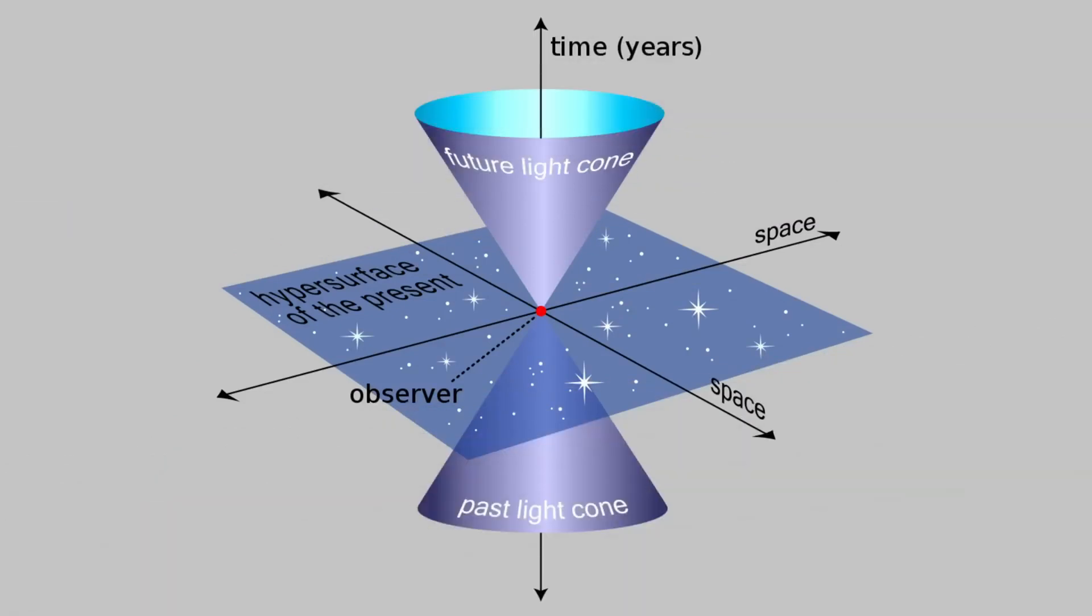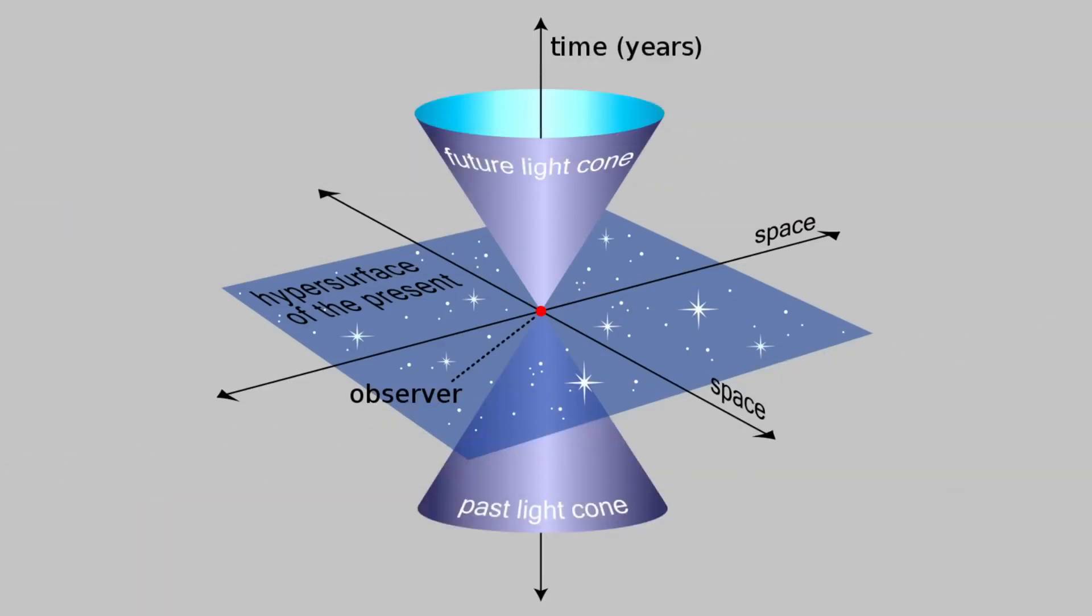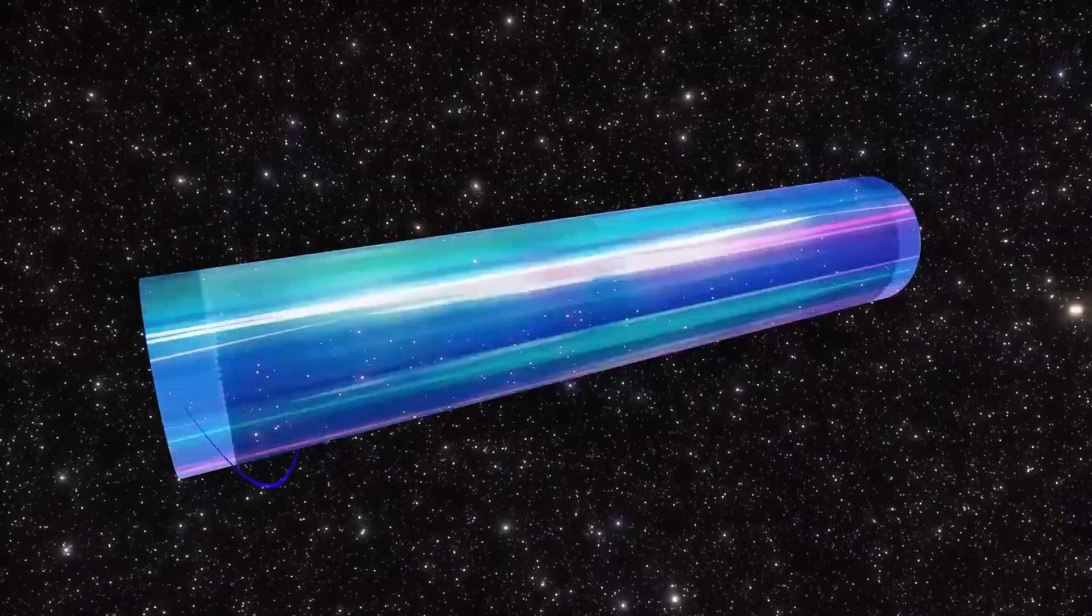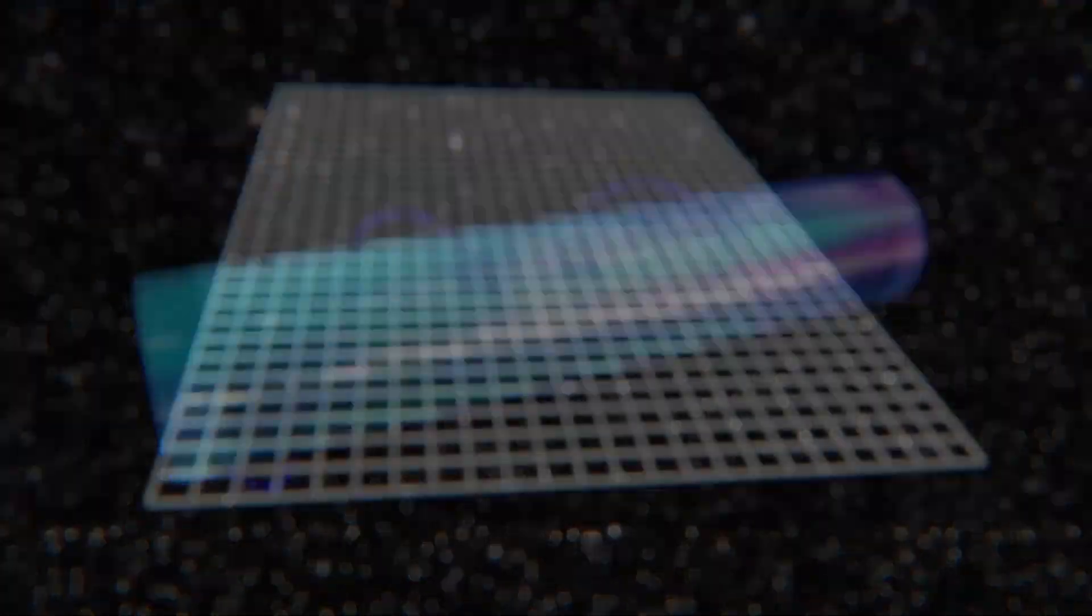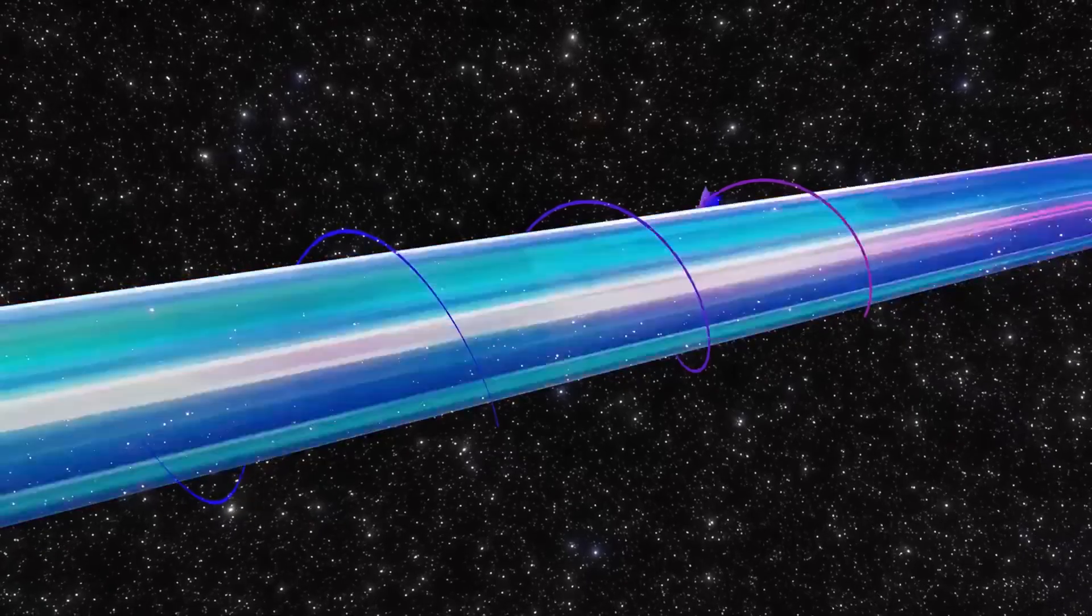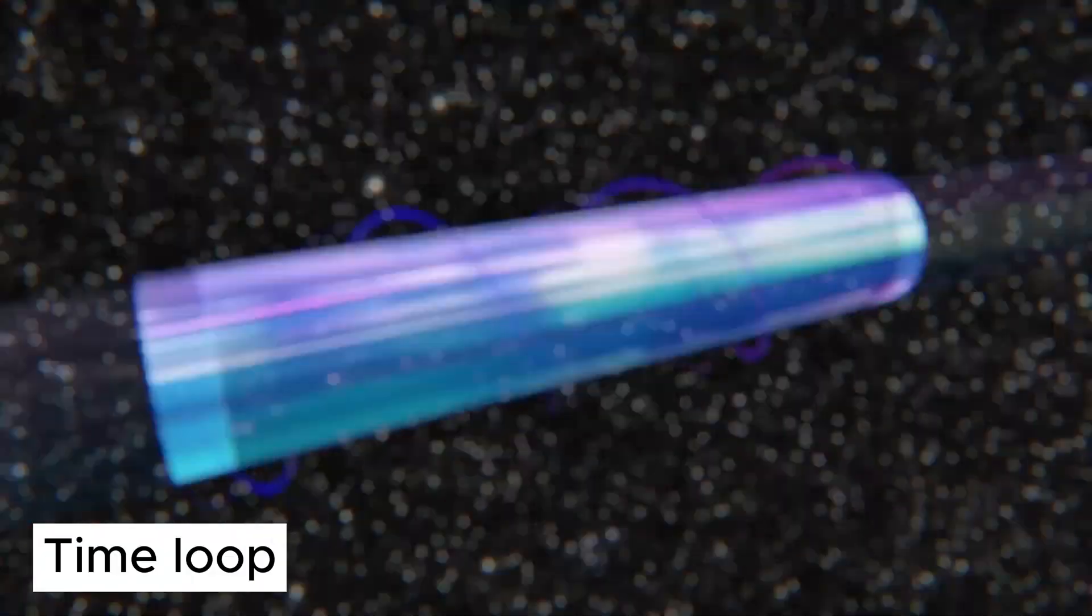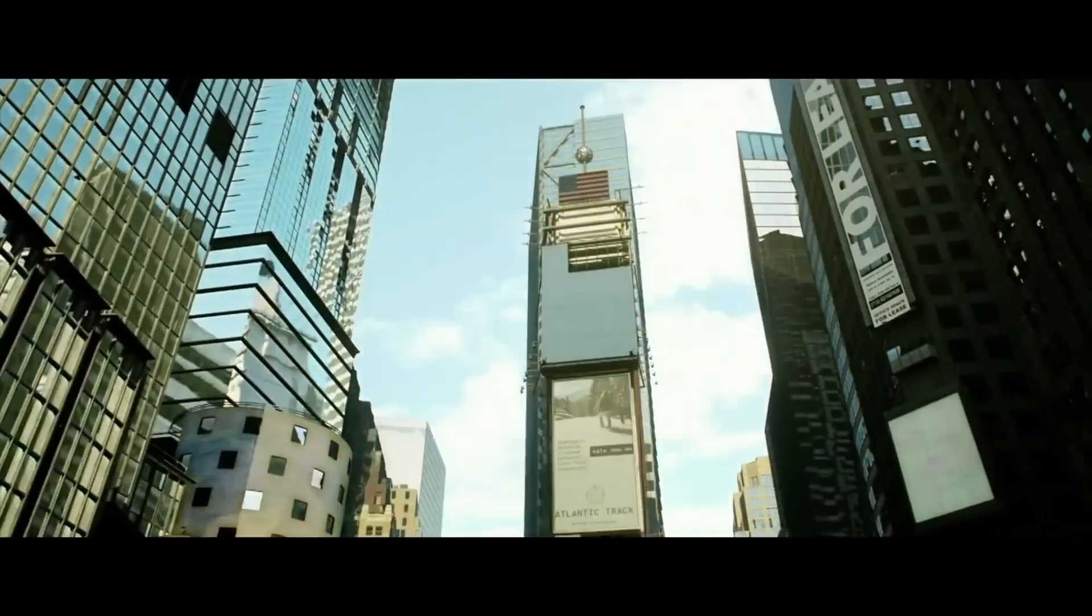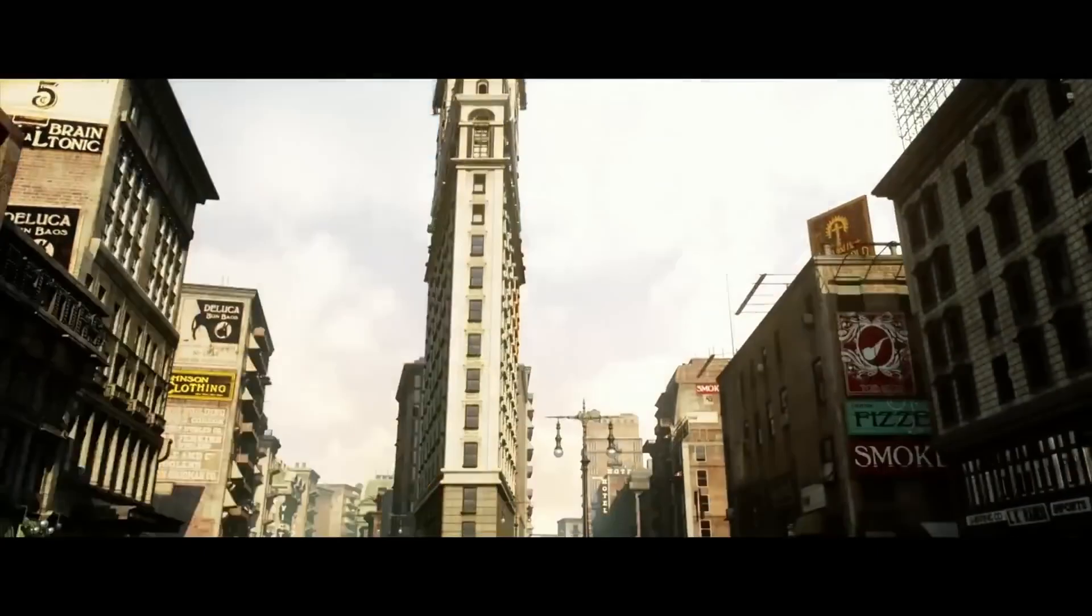Returning to Tipler's time machine, he believes that when a cylinder with the mass of ten suns rotates extremely fast, the frame-dragging effect will warp space-time, causing the light cone of objects near the cylinder to tilt, to the extent that part of the cone will rotate backward along the time axis. This forms something you can roughly understand as a time filter. If a spacecraft can accelerate fast enough and match the rotational speed of Tipler's cylinder, it can travel back in time along this closed time-like curve, appearing somewhere thousands or even billions of years from the starting point.